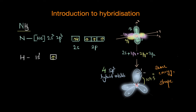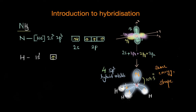Now that our hybrid orbitals are ready, let's fill them with electrons. We have three unpaired electrons and one hybrid orbital has a paired electron. These three unpaired electrons of the nitrogen atom can combine with the 1s electrons of three hydrogen atoms, forming three N-H bonds. We also have a lone pair of electrons in one of the sp3 hybrid orbitals, and we cannot ignore this because even though the lone pair does not form a bond with hydrogen, it still influences the shape of the molecule.